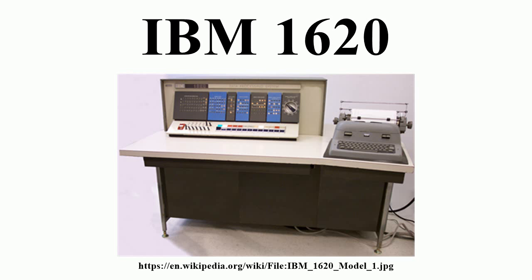The 1620 architecture: it was a variable word length decimal computer with memory that could hold anything from 20,000 to 60,000 decimal digits, increasing in 20,000 decimal digit increments. Memory was accessed two decimal digits at a time. The flag bit had several uses: in the least significant digit it was set to indicate a negative number; it was set to mark the most significant digit of a number; in the least significant digit of five-digit addresses it was set for indirect addressing. Multi-level indirection could be used. In the middle three digits of five-digit addresses they were set to select one of seven index registers.